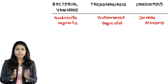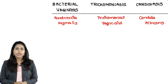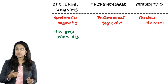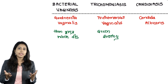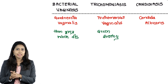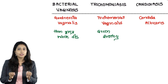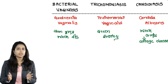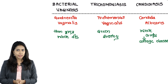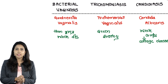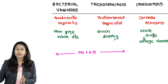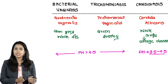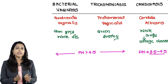Now let us discuss the vaginal discharge typically seen in each of them. In bacterial vaginosis it is a thin grayish-white discharge, whereas in trichomonas vaginalis it is a green frothy discharge, whereas in candidiasis there is a typical white curdy discharge — also known as the cottage cheese appearance. Coming to the pH, all of these make the pH more alkaline, that is the pH is going to be more than 4.5, except in candidiasis in which the normal acidic vaginal pH is maintained, which is between 3.5 to 4.5.